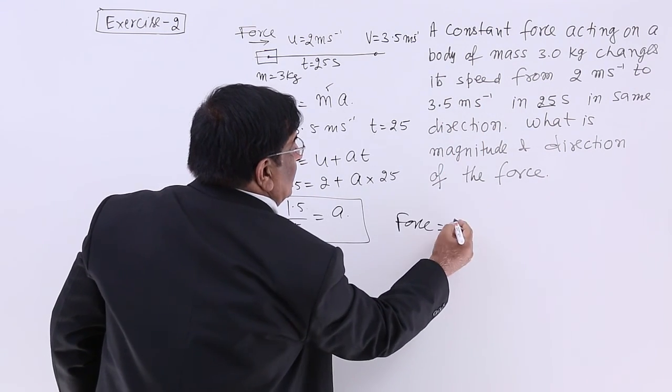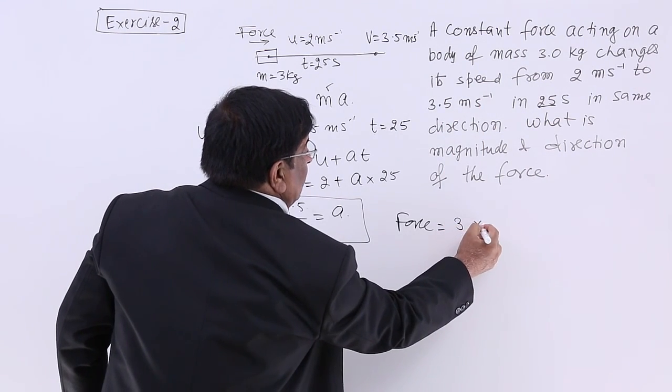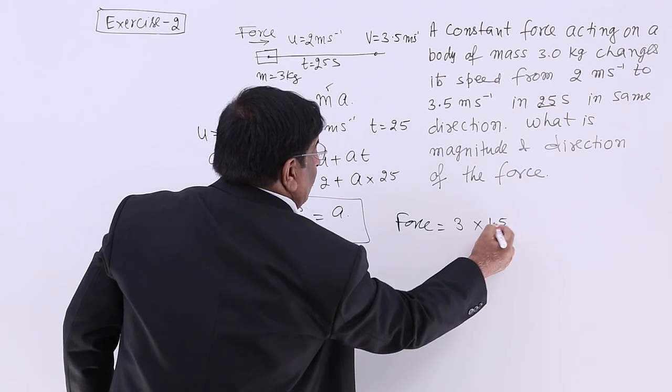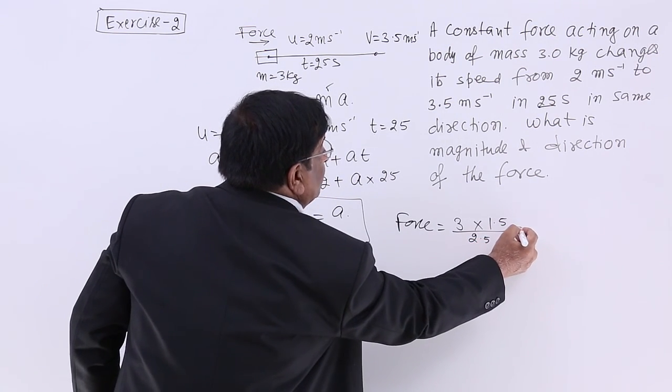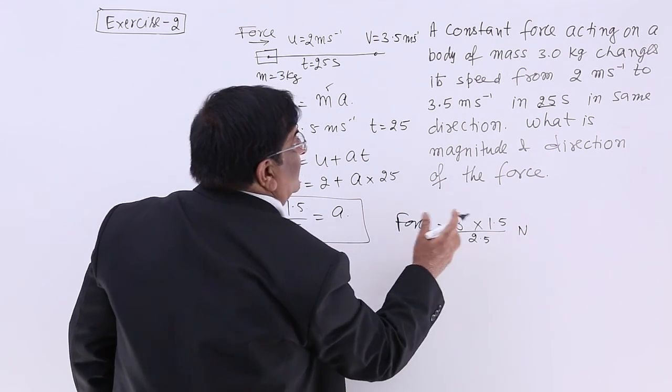Force is equal to mass into acceleration. Mass is given to us: 3. So this is 3 into 1.5 upon 25 Newton. This is our answer.